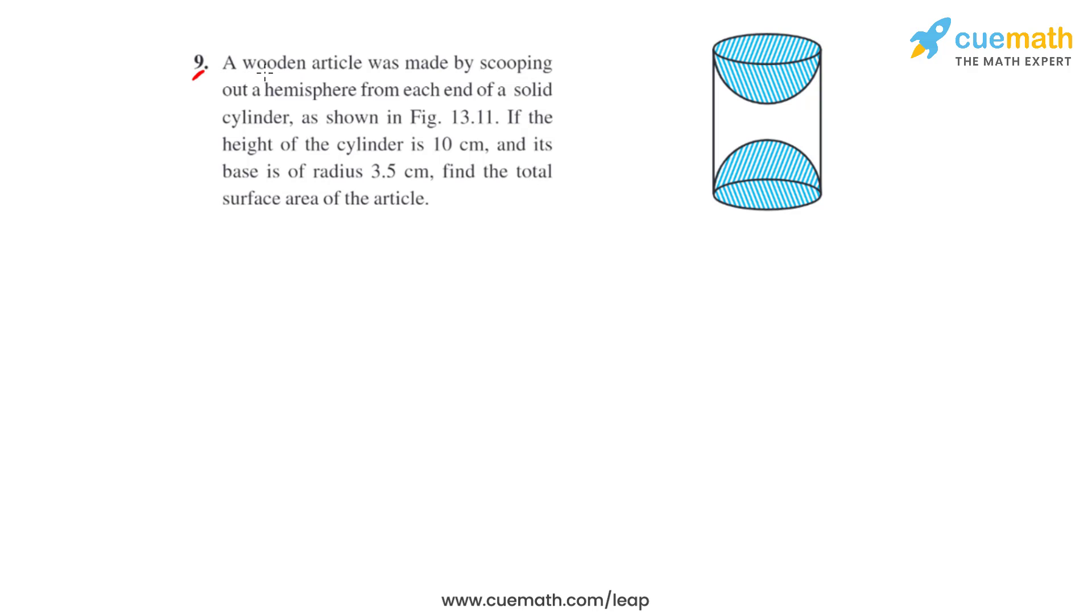Question number nine says that a wooden article was made by scooping out a hemisphere from each end of a solid cylinder, as shown in Figure 13.11. This is the figure that we have, and here we can see that there are two hemispheres shaded in blue.